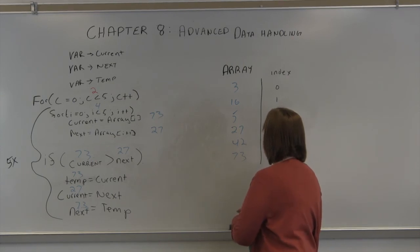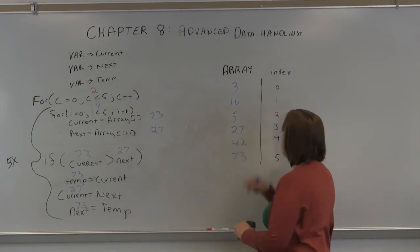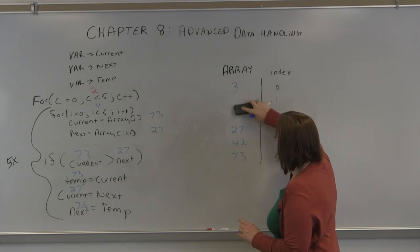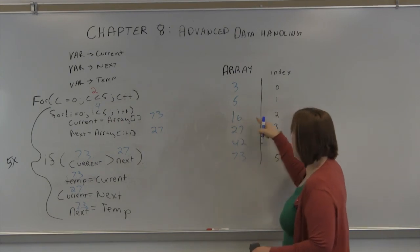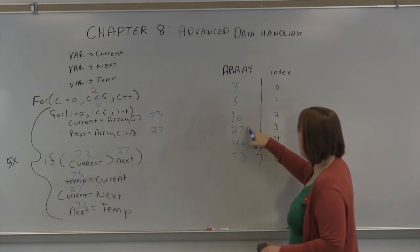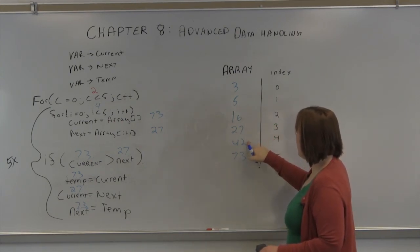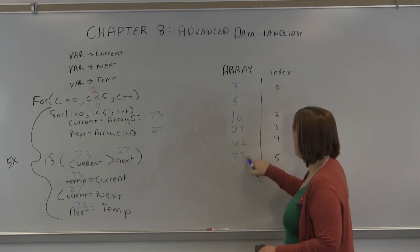So again, we compare 3 and 16. 3 and 16 are in the right order. We compare 5 and 16. Need to move 5 and 16. Now they're in the right order. 16 and 27, they're in the right order. 27 and 42, they're in the right order. 42 and 73.